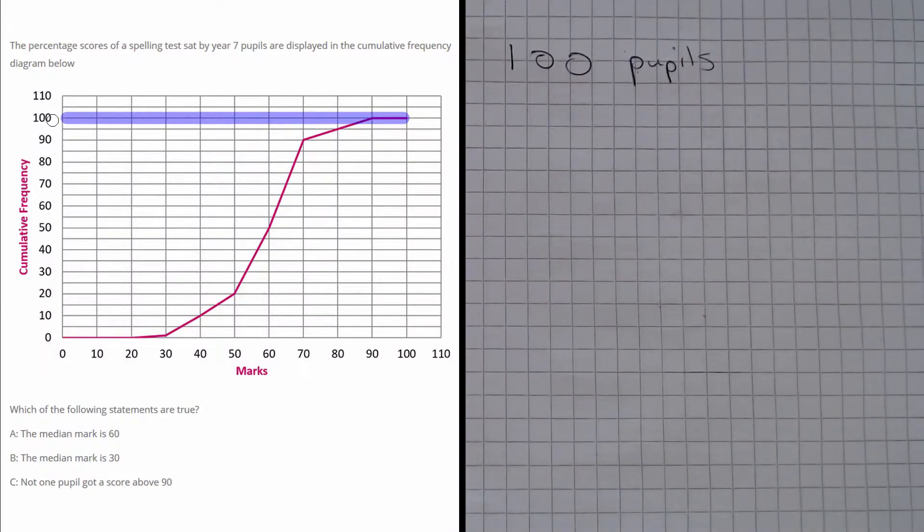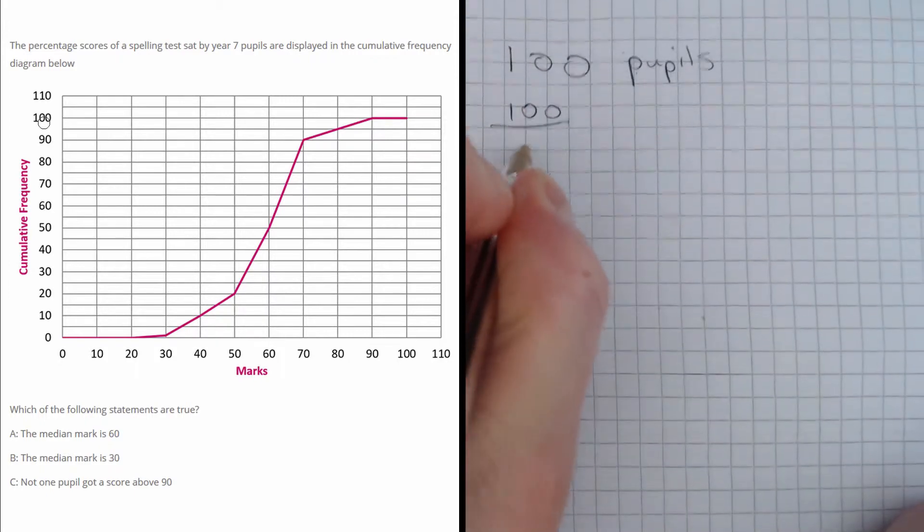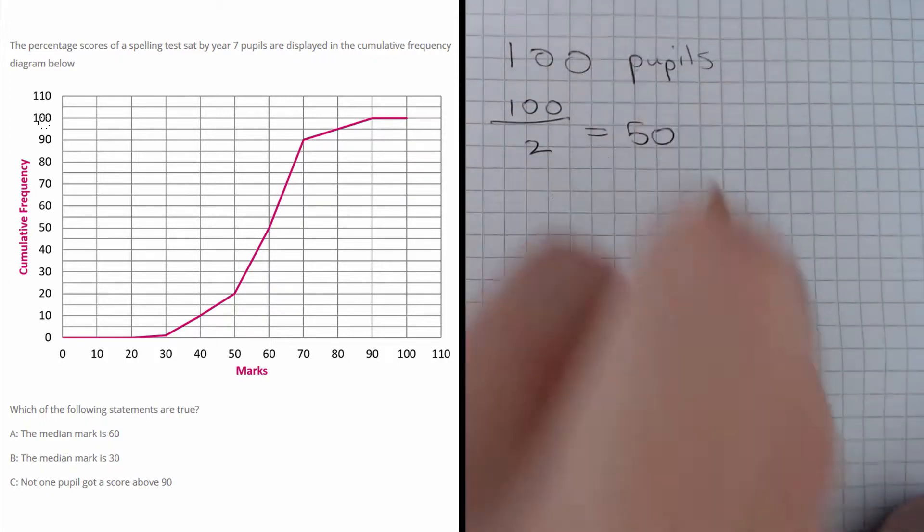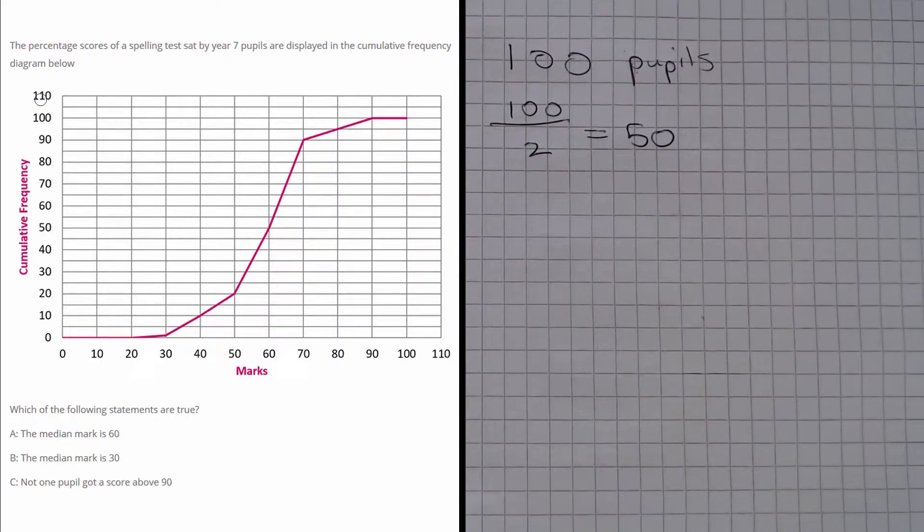And now what we do is we take this number 100 and we divide it by 2. Now 100 divided by 2 is 50. And then we go all the way down on the vertical axis until we hit 50.